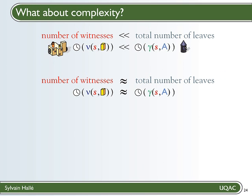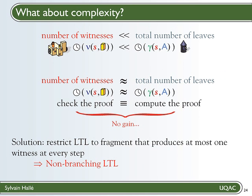However, if the number of witnesses is not really smaller than the total number of branches, the server isn't spared of much work. And this means that in that case, checking the proof is not significantly quicker than computing it in the first place. But since the goal of cooperative runtime monitoring is precisely to spare time on the server, then we don't gain much by doing this.